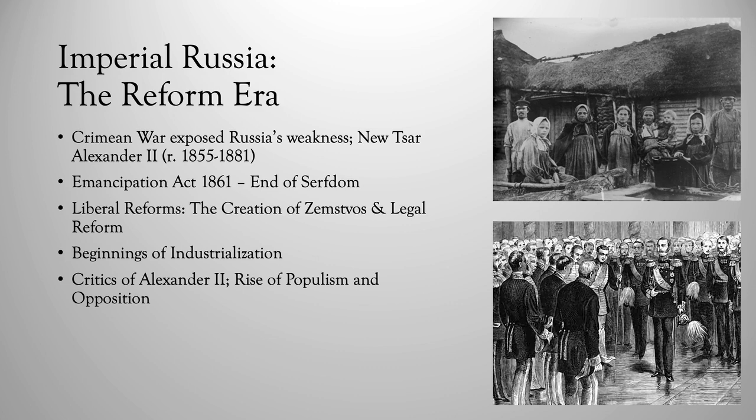Railroads allowed Russians to export grain to Western Europe in exchange for machinery and profits. This led to a lot of foreign investment, and it also allowed Russia to begin some of its own industrialization. The railroad building also stimulated domestic manufacturing. Industrial suburbs started to pop up around Moscow and St. Petersburg, and a class of modern factory workers, or proletariat, began to emerge, although they were still very small by comparison to the rest of Russia.